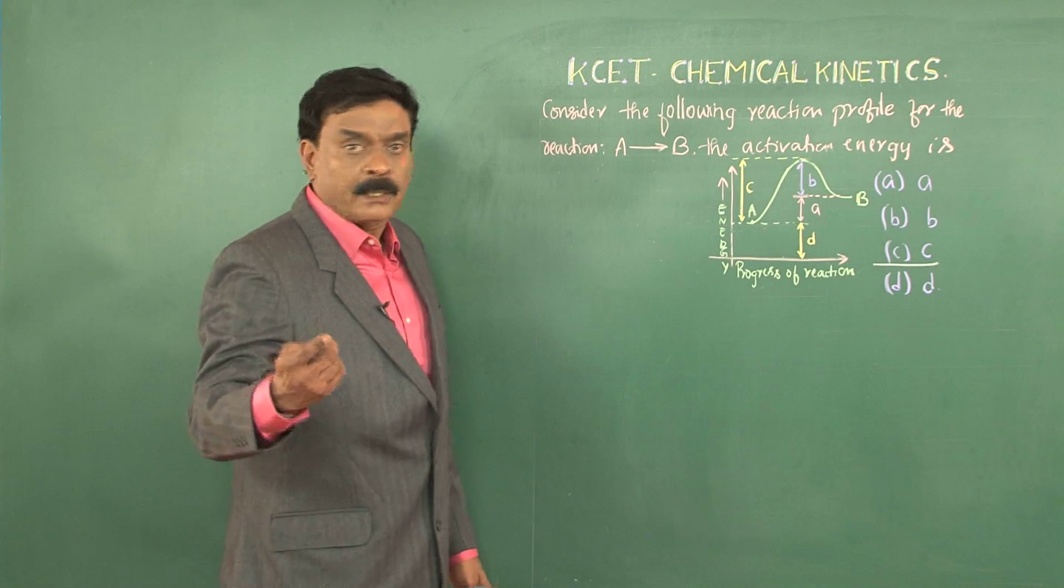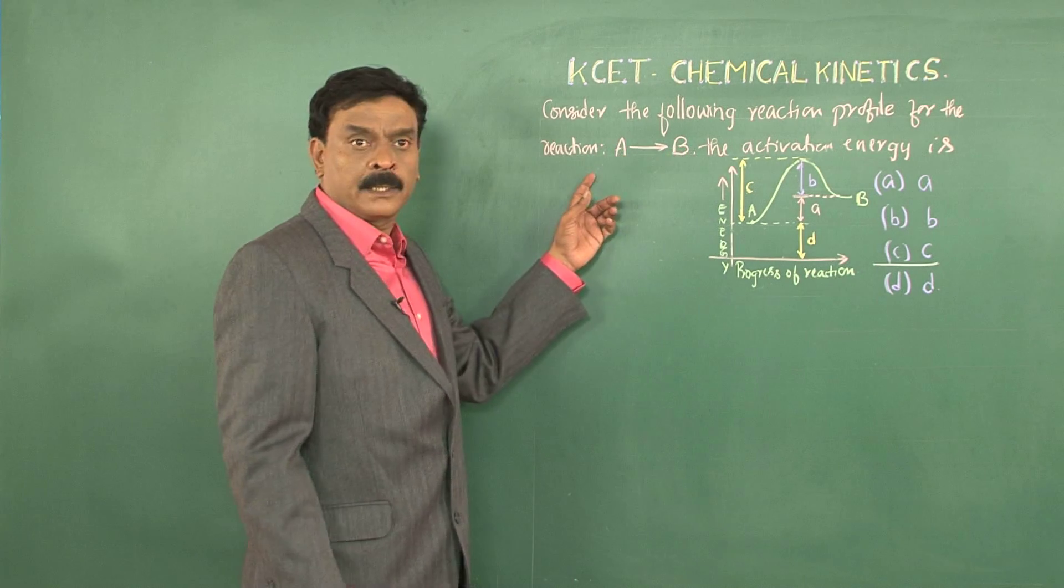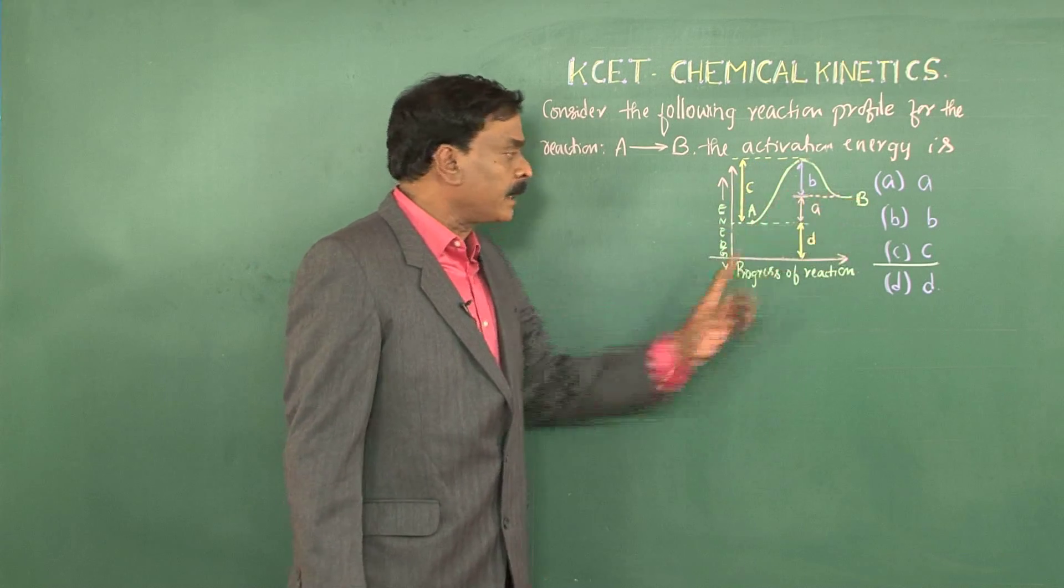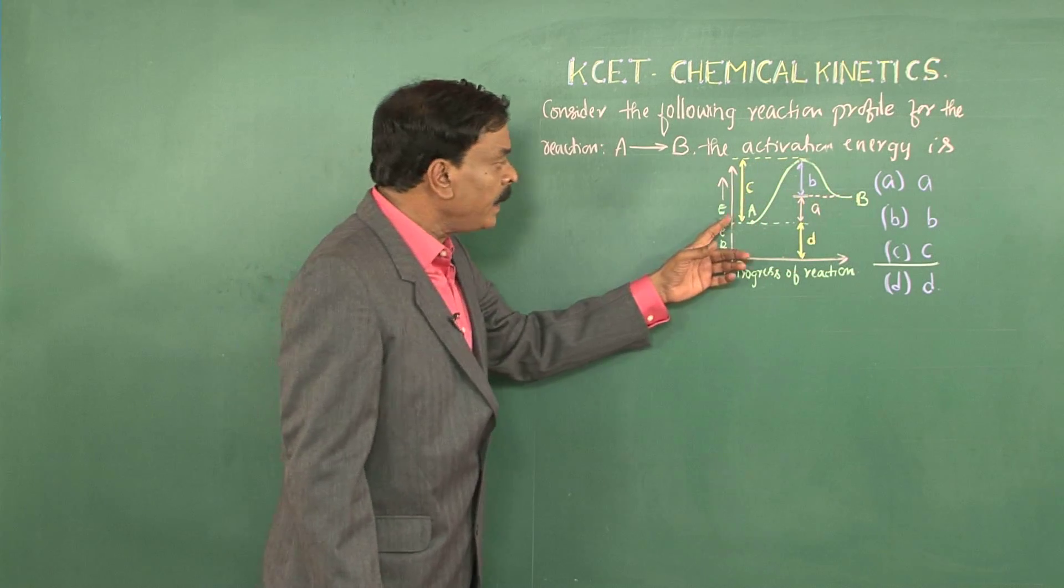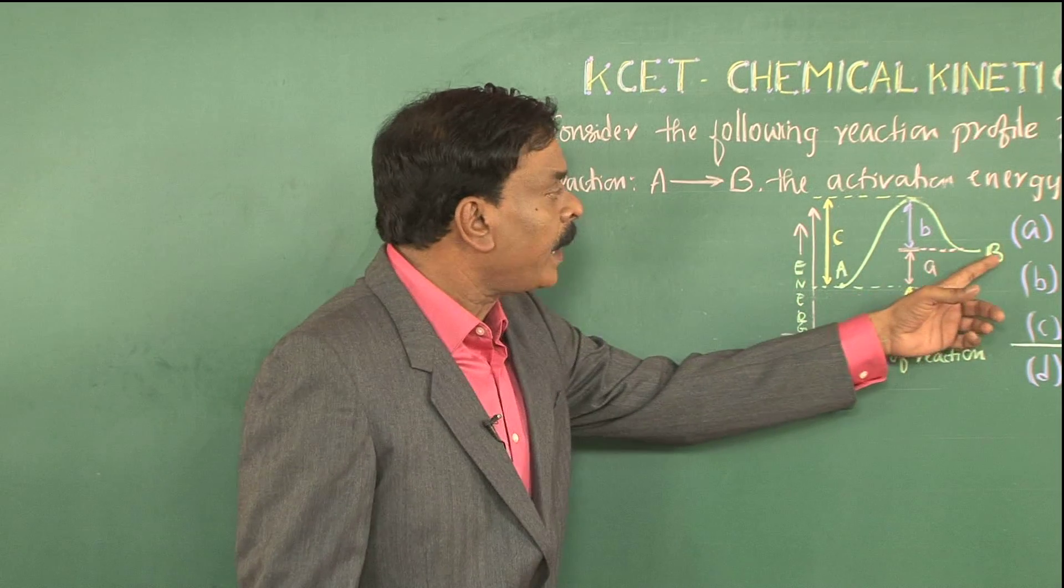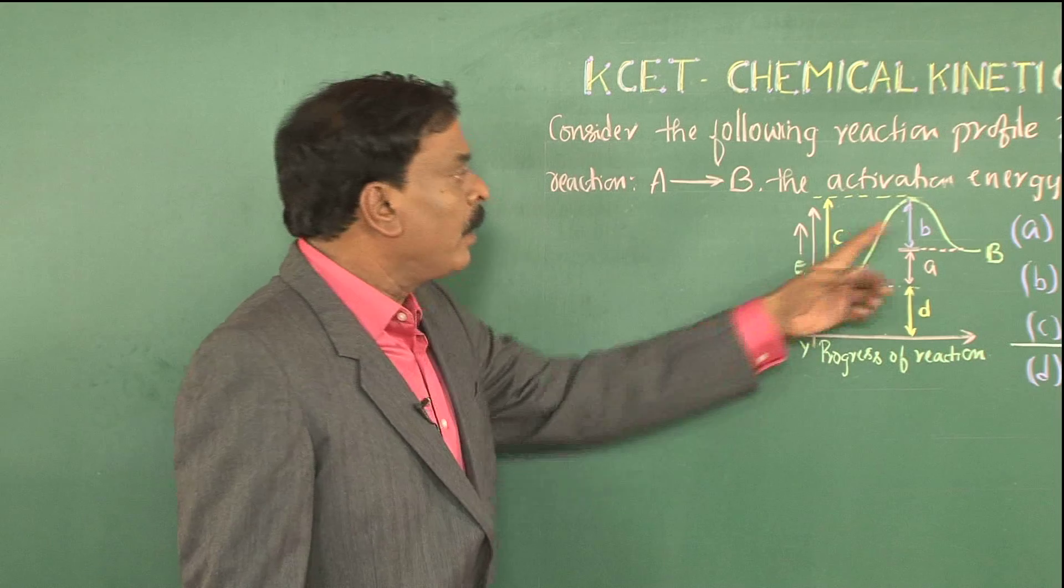If the reaction was B giving A, that is the reverse of the reaction, B becomes the reactant, A becomes the product. Then, the activation energy for the reaction B giving A would be B.